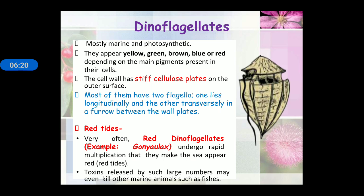Next is dinoflagellates. As the name indicates, they have two flagella; mostly marine and photosynthetic. They appear yellow, green, brown, blue, or red depending upon the pigment. The cell wall has stiff cellulose plates on the outer surface. One flagellum lies longitudinal and the other lies transverse in a groove. Red tide is an example of dinoflagellates — it is due to the red dinoflagellate known as Gonyaulax, which undergoes rapid division, causing the sea to appear red.